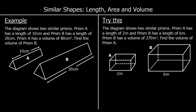Let's look at an example. The diagram shows two similar prisms. Prism A, our smaller prism, has a length of 10cm. And prism B, the larger one, has a length of 20cm. Prism A has a volume of 80cm cubed. We can find our scale factor for length first — to get from 10 to 20, the scale factor for length is multiplied by 2.